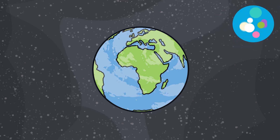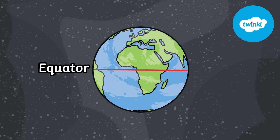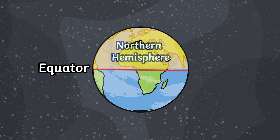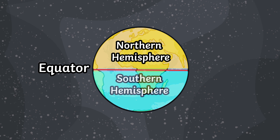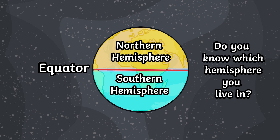Did you know around the middle of the Earth there is an imaginary line that we call the equator? Everything north of this line is known as the northern hemisphere, and everything south of this line is called the southern hemisphere. Do you know which hemisphere you live in?